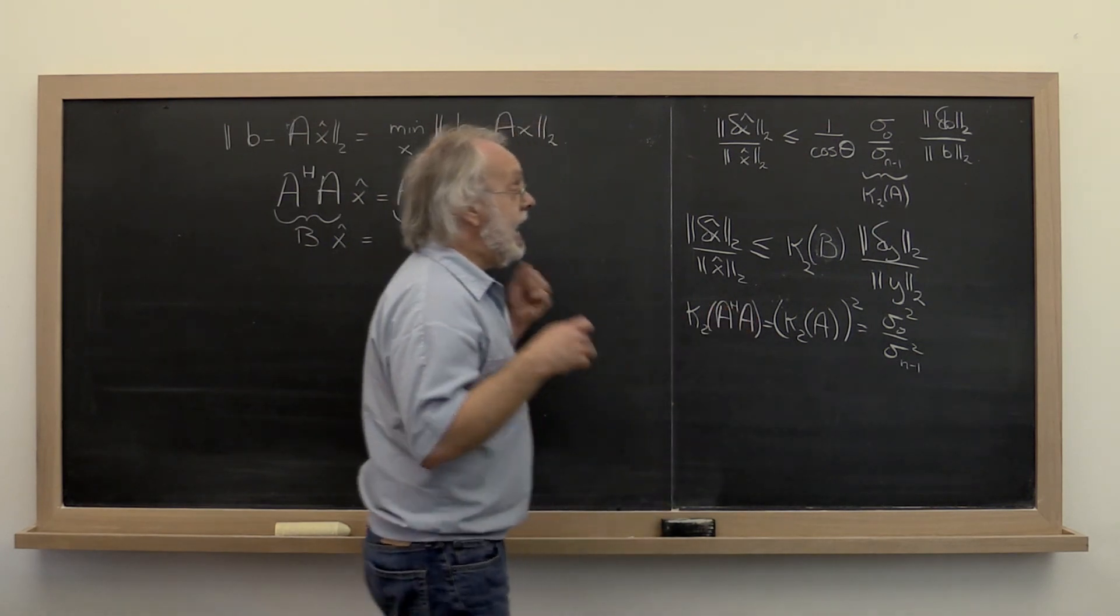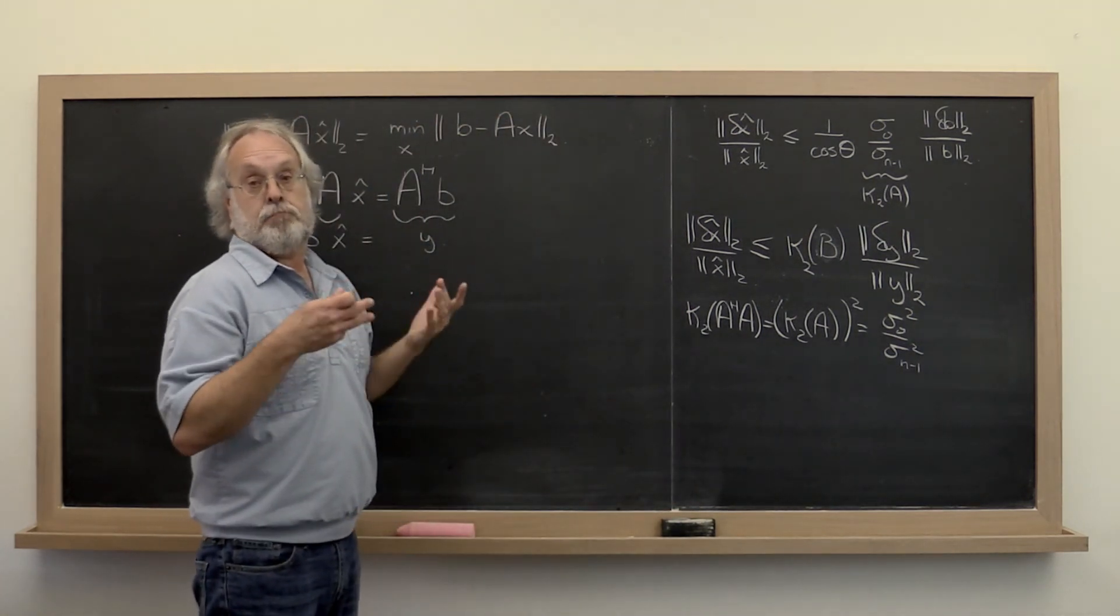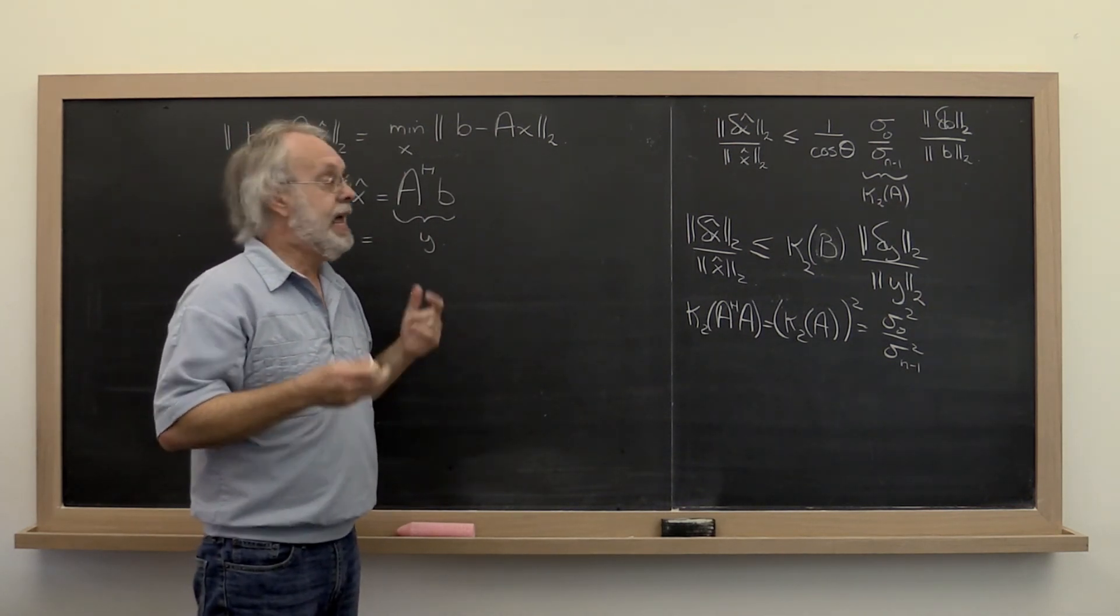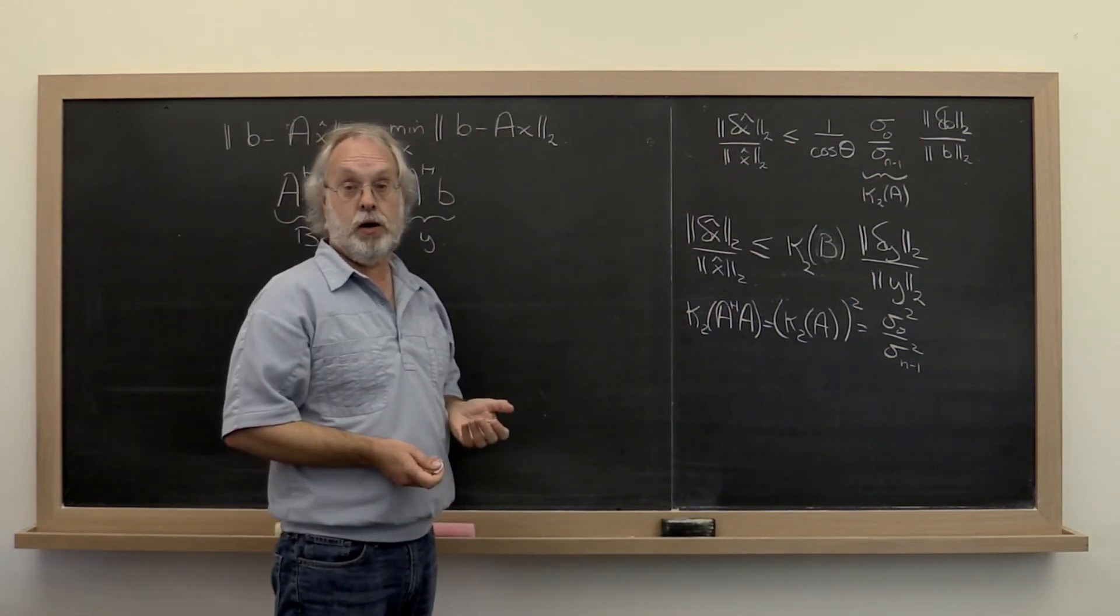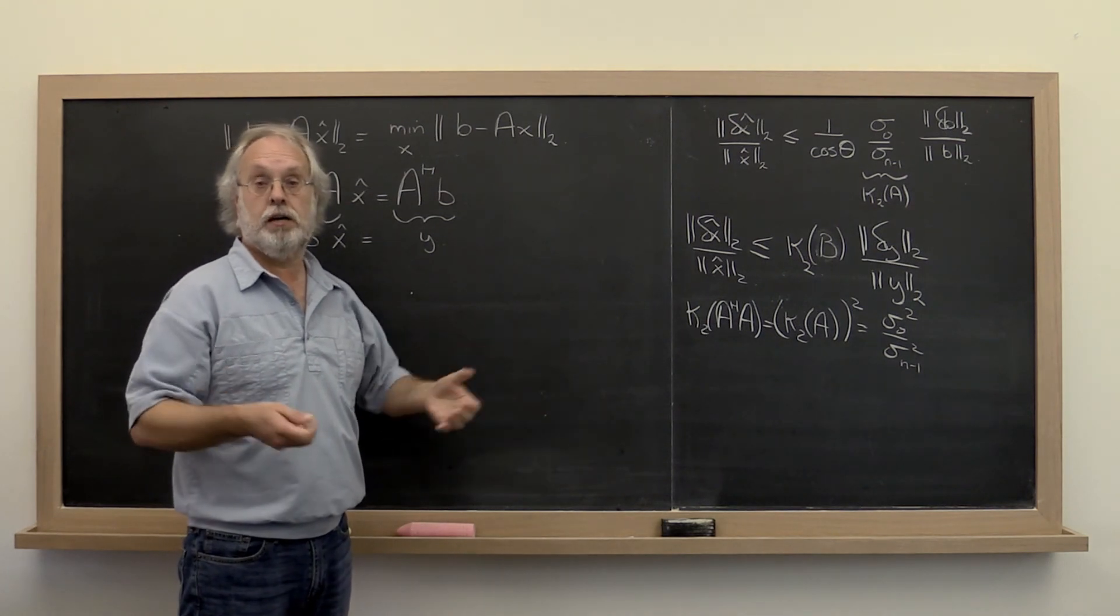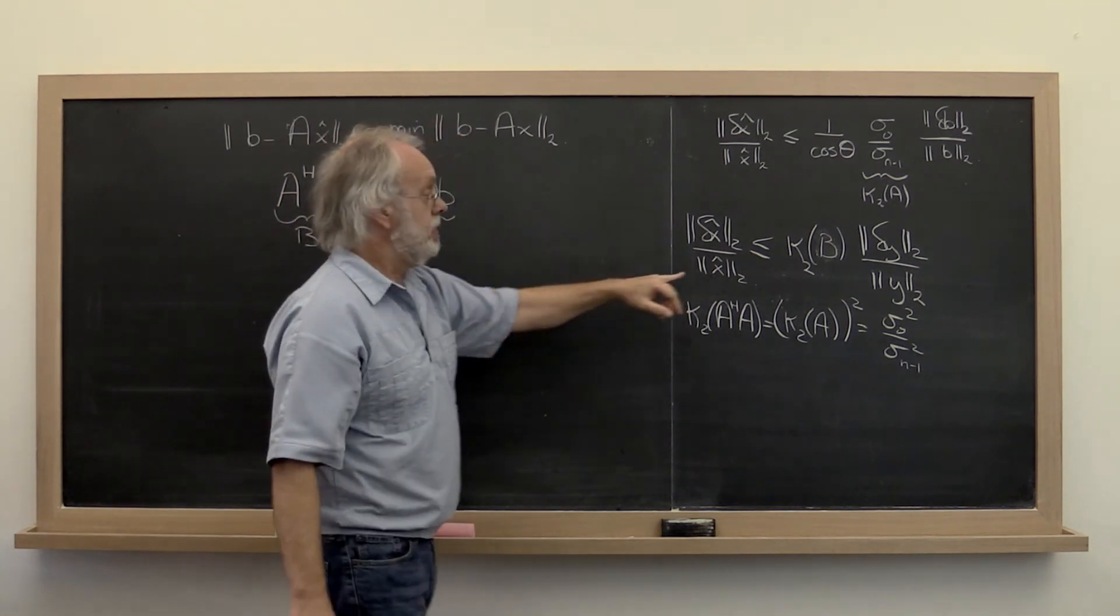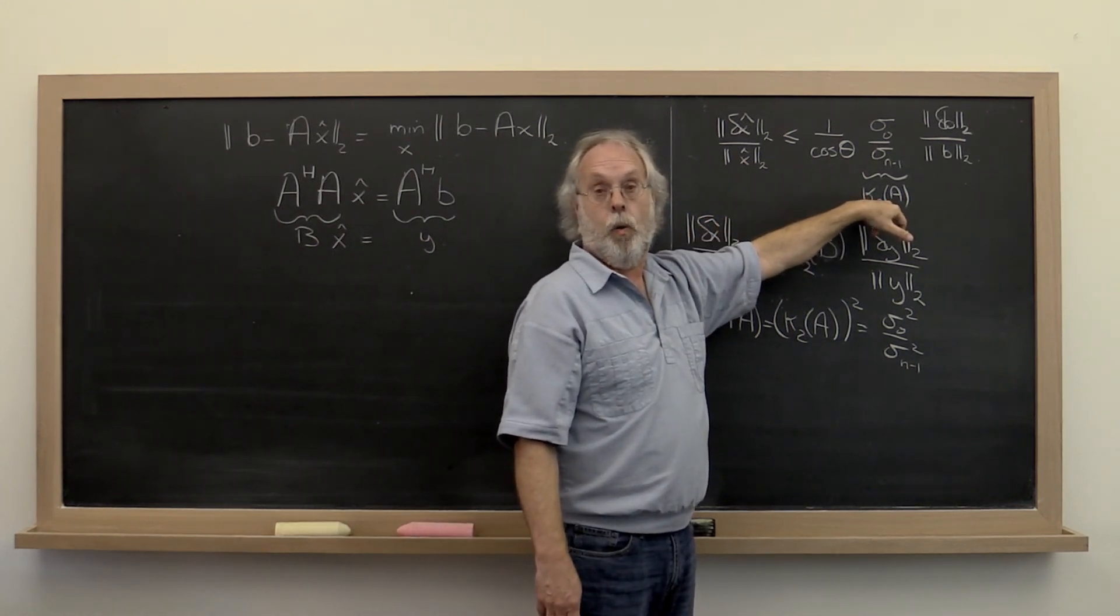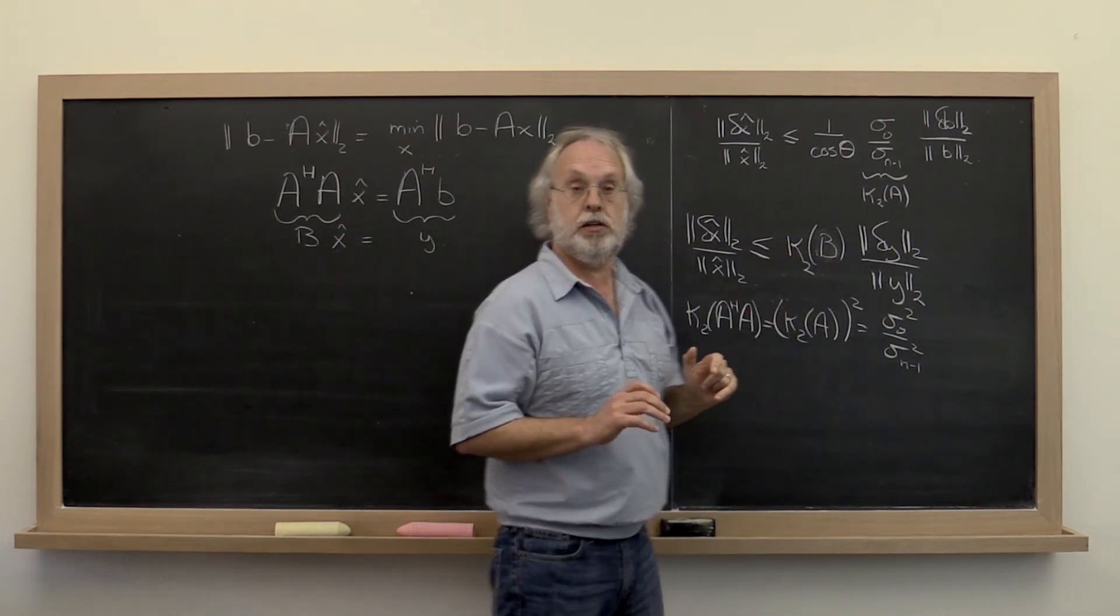So as long as the condition number of A is small, as long as A is not close to a matrix with linearly dependent columns, and as long as you have a decent number of digits of accuracy to start out with in your right-hand side, the method of normal equations is an acceptable way of going about your business. But the instant things get a little tricky, the instant that the condition number of A gets large, or you didn't have a whole lot of accuracy to start out with, you should not be using the method of normal equations.